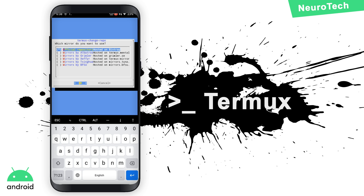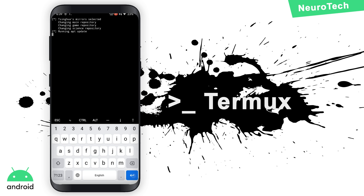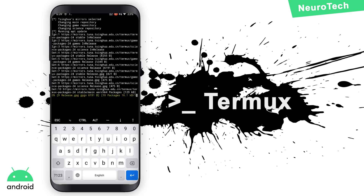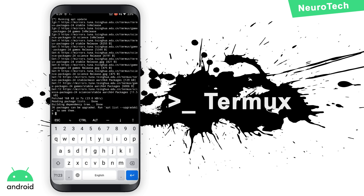Then, select 'Mirror by Singwa' and select OK. It's done! It's done! The downloading has started. Oh yeah! The mirror repository is completely changed. Oh yeah!